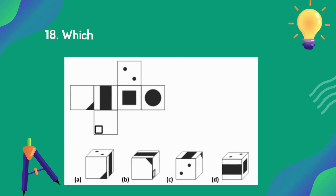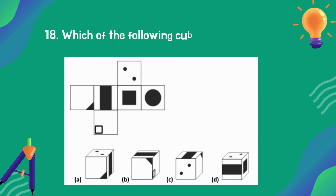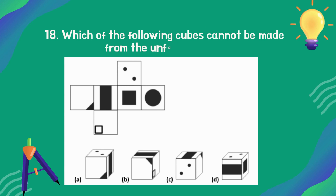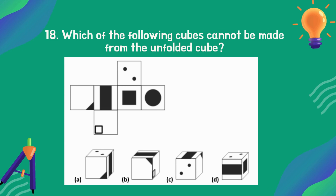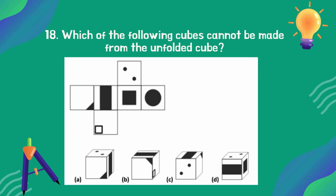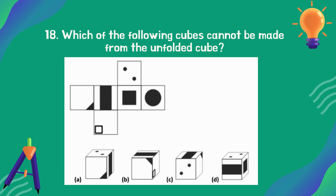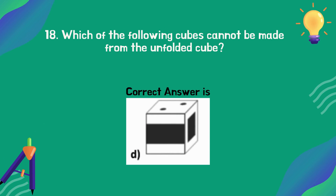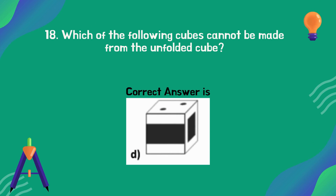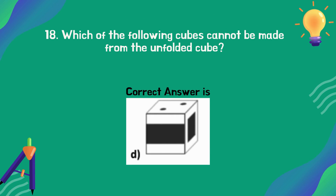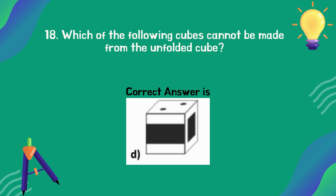Which of the following cubes cannot be made from the given unfolded cube? The correct answer is option D.